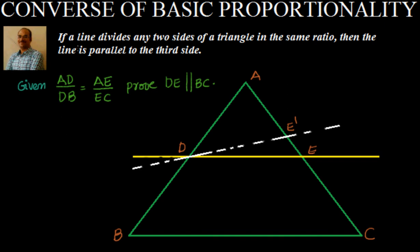The converse of basic proportionality theorem states that if a line divides any two sides of a triangle in the same ratio, then the line is parallel to the third side. We have taken triangle ABC and there is a line DE which divides the sides AB and AC in the same ratio. That means AD divided by DB is equal to AE by EC.